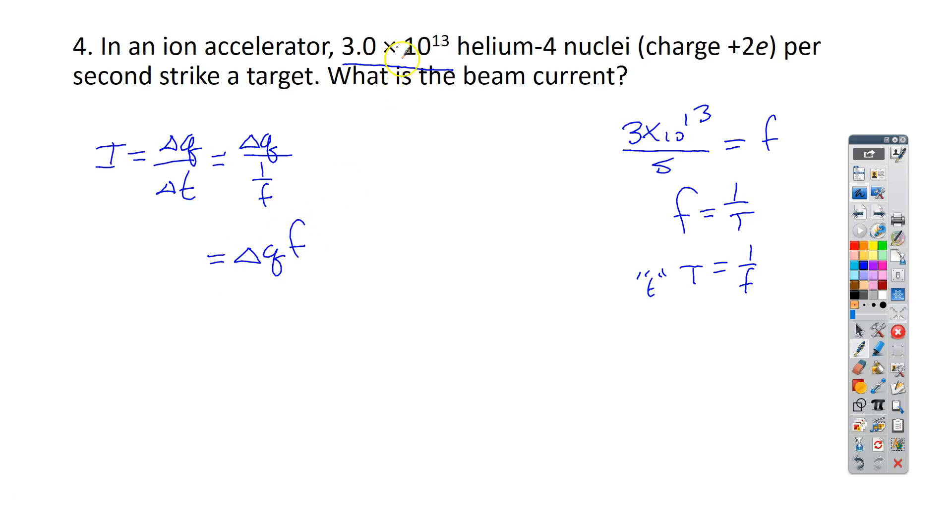So let's figure out the charge. I know I've got this many nuclei. I know that there is a charge of 2 times the regular elemental charge here. So we're going to take 2 times that charge, which is 1.602 times 10 to the negative 19th Coulombs. And then we're going to multiply that by the frequency, which is 3 times 10 to the 13th. And when we get done, we're going to end up with 9.6 times 10 to the negative 6th amps. And if you remember your prefixes, that's just 9.6 microamps. And that's the end of that problem.